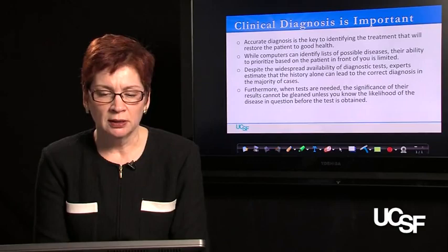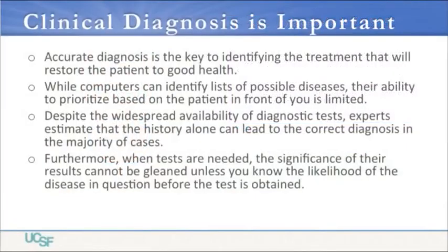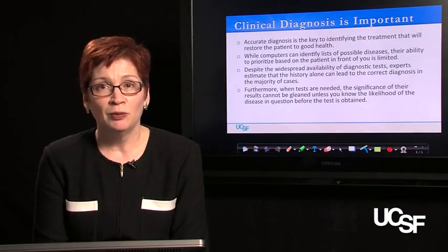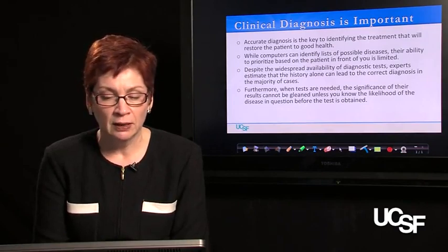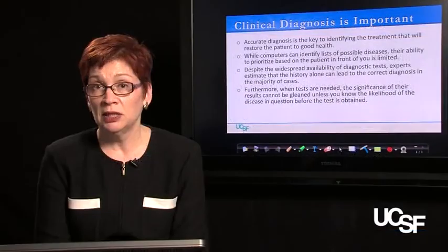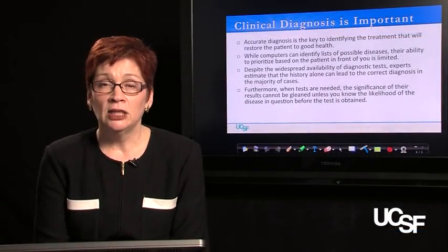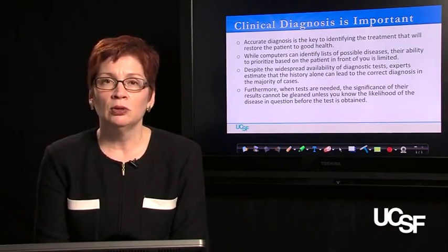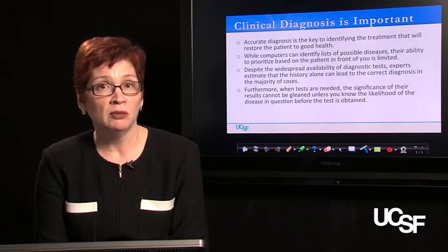Clinical diagnosis is very important. Accurate diagnosis is the key to identifying the treatment that will restore the patient to good health. While computers can generate lists of possible diseases when signs and symptoms are entered, the computer's ability to prioritize disease likelihood based on the specific patient in front of you is very limited — this is still only the clinician's mind that can accomplish. Despite widespread diagnostic tests, experts estimate that history alone can lead to the correct diagnosis in up to 75% of cases, and adding physical exam accounts for an additional 15%.